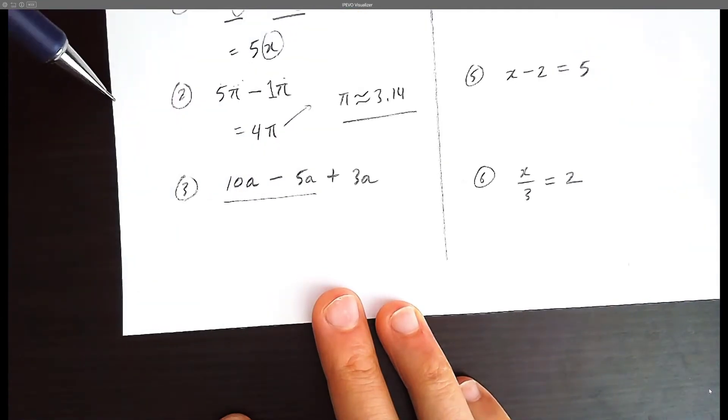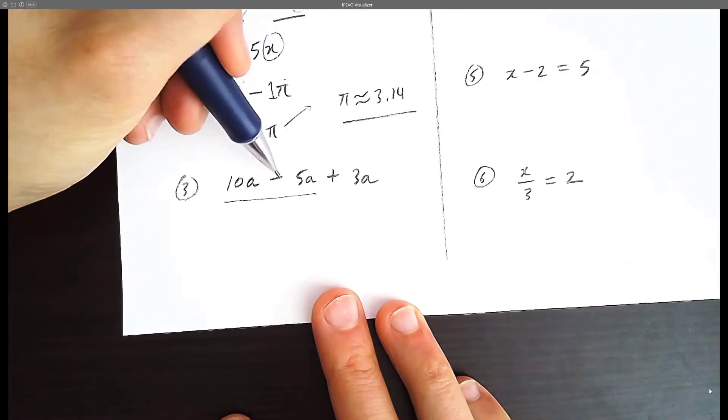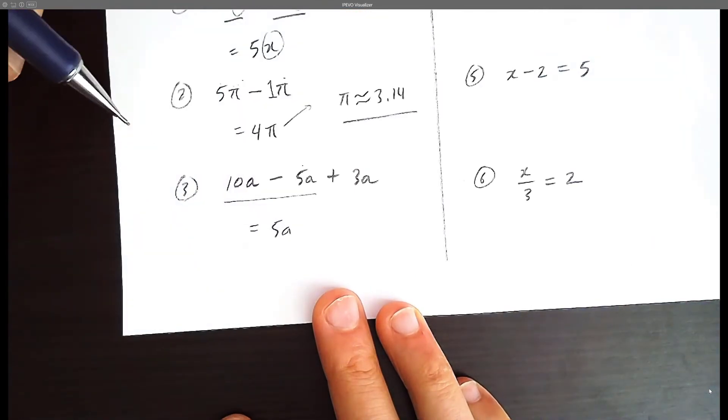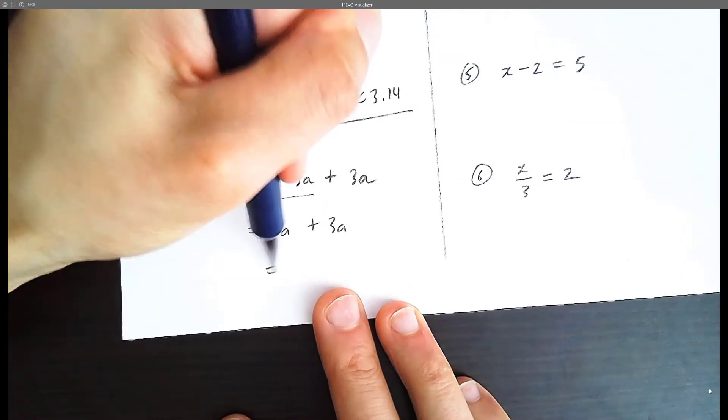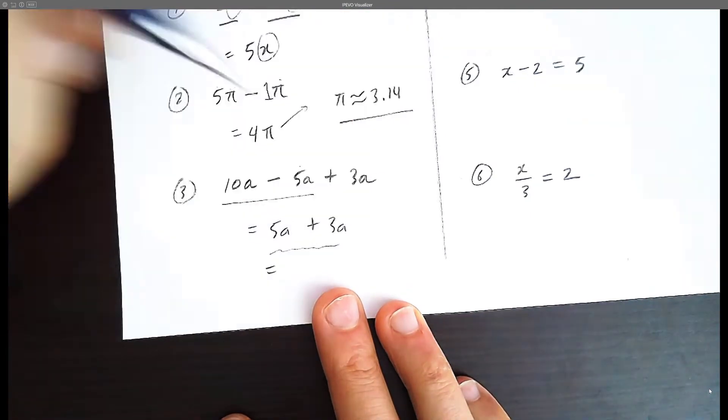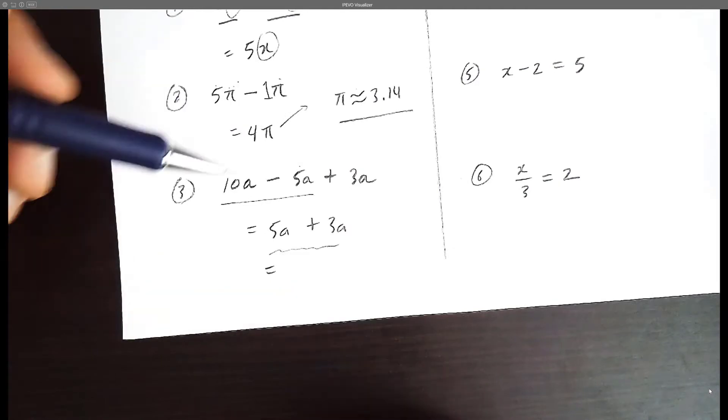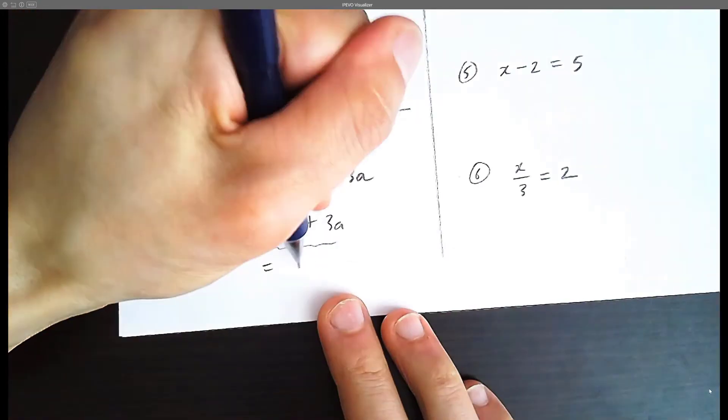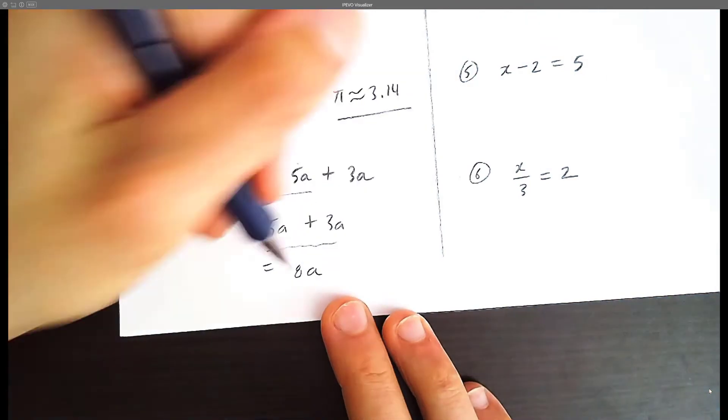Let's focus on the first part. What's 10 apples minus 5 apples? The answer is 5 apples. I'm just going to copy down the rest here, and now let's focus on the second part. What's 5 apples plus 3 apples? The answer is 8 apples, and that's our final answer.